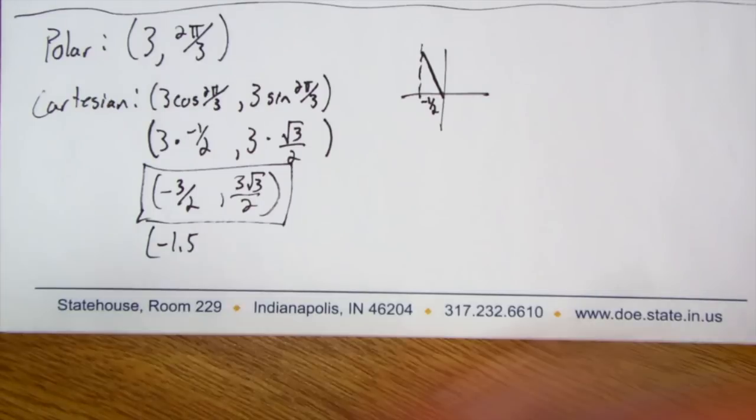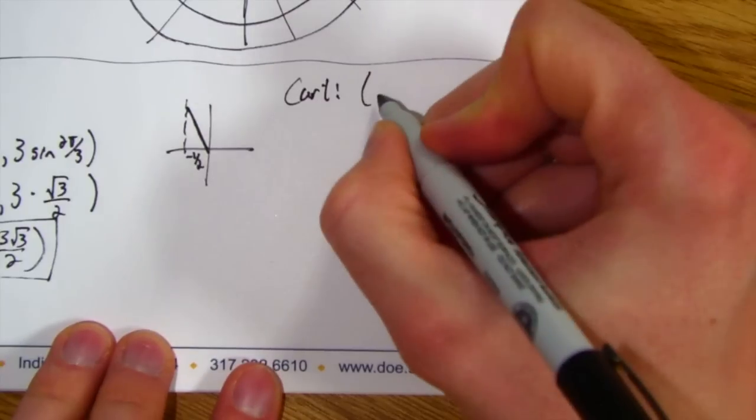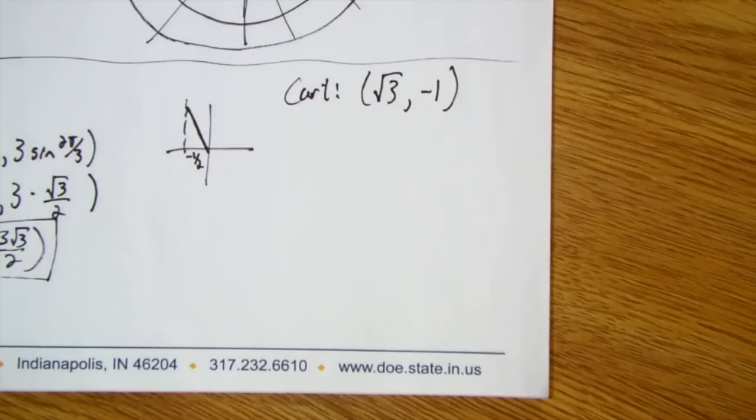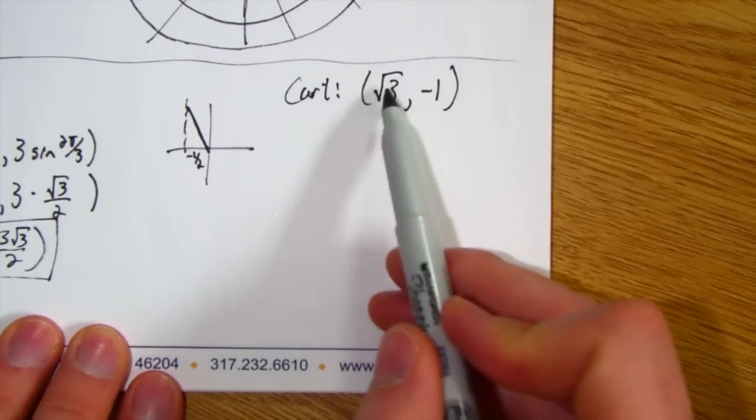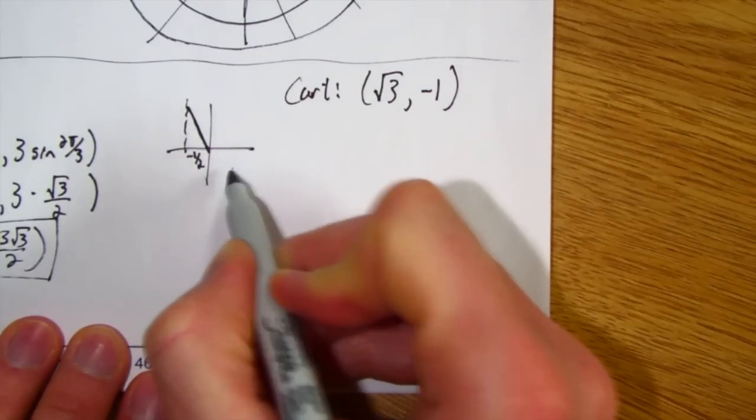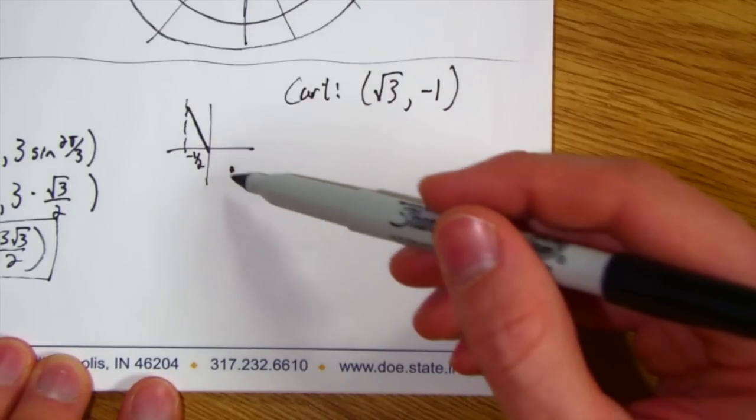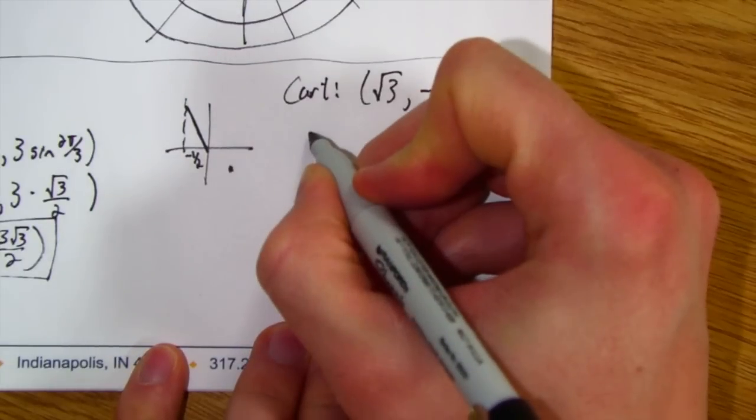Let's see if we can go backwards. So now what I'm going to do is take a point that's in Cartesian, and that point is going to be √3 comma negative 1. And when I'm going from Cartesian to polar, I really want to make sure to think about where is that point as far as which quadrant it's in? Well, √3 comma negative 1 is in this quadrant. So I want to make sure when I get my answer in polar coordinates that it seems to be something that would be in the fourth quadrant.